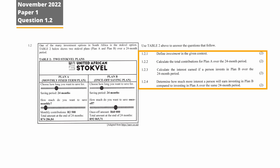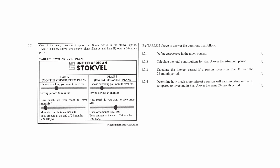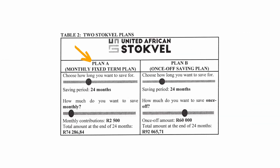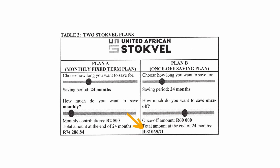Question 1.2 consists of four finance questions designed to assess your understanding of investment options in the South African context. You are given two stock fund options, Plan A and Plan B, in Table 2. Plan A is a monthly fixed-term plan for a period of 24 months with a monthly contribution of R2,500 and a predicted total of R74,286.84. Plan B is a once-off saving plan for 24 months requiring a once-off investment of R60,000, with a predicted total of R92,065.71.